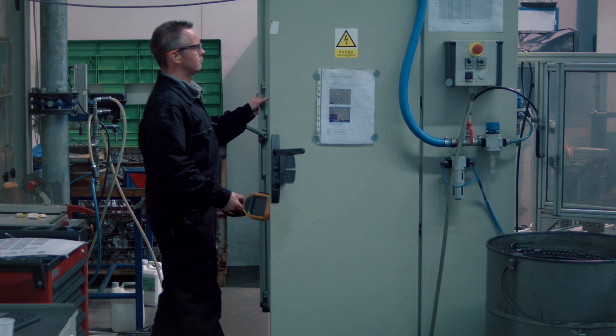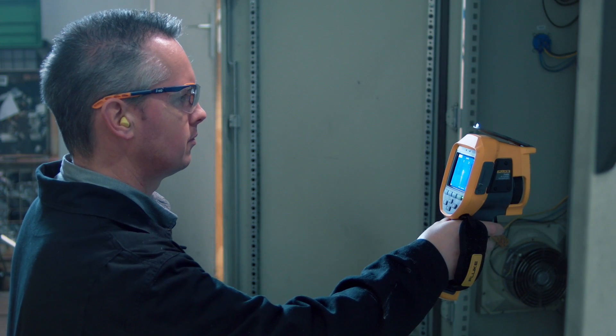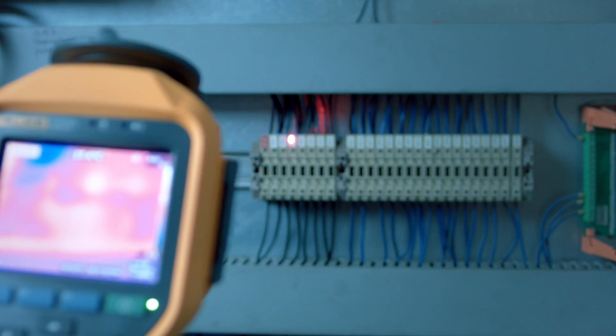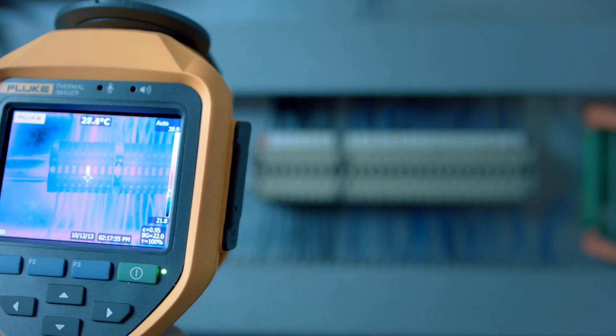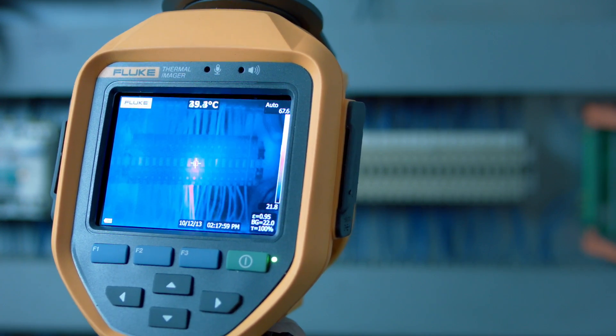When you do a routine check of a new installation, everything in this installation seems okay to the human eye. But an infrared image indicates something different. As clearly seen in the infrared image, one of the terminal connections shows the overheating.